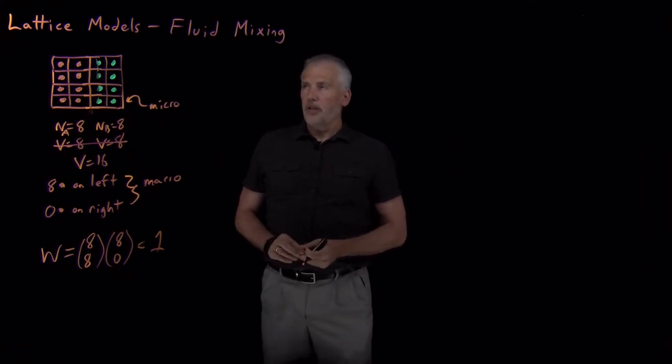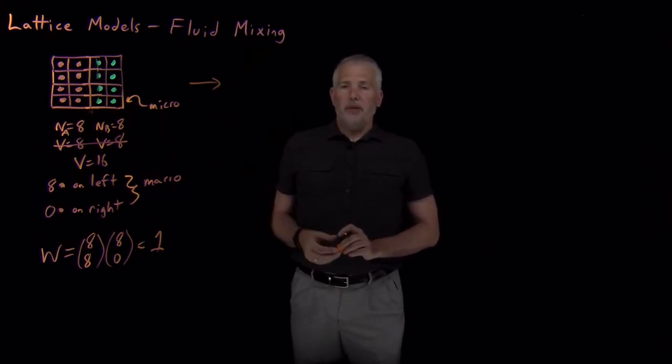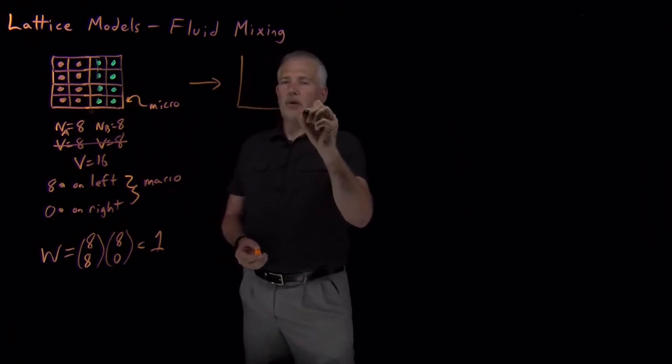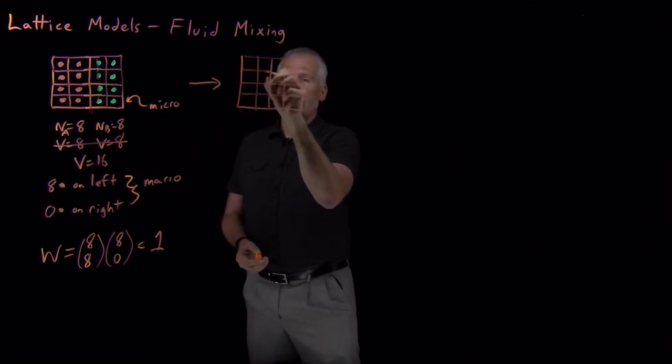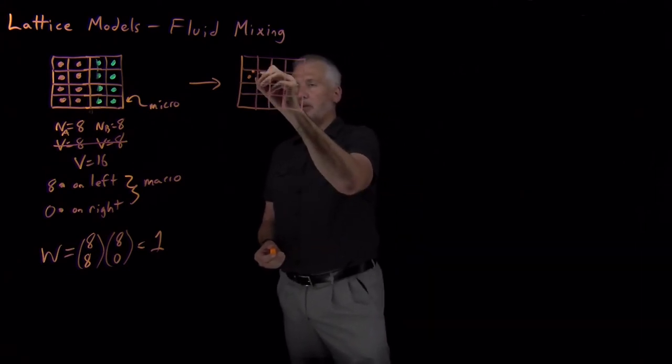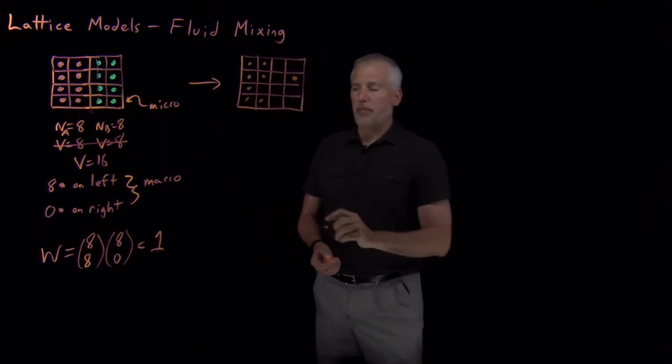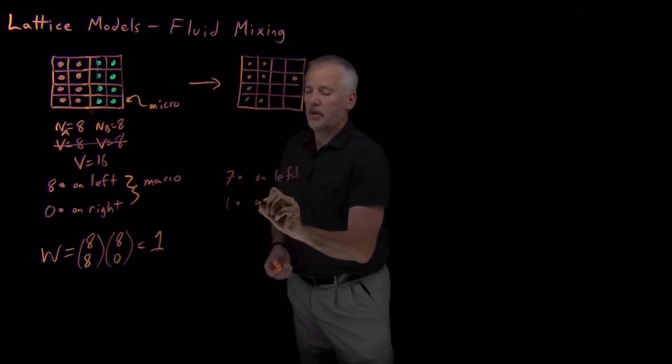So what we want to understand is what this lattice model has to say about whether fluids mix or don't. So I can draw other configurations that show the fluids mixing partially or fully, and the multiplicity, the probabilities, will tell us how likely those particular outcomes are. So let's consider a state where I've still got this combined volume of 16 grid positions. And let's say I want to let the molecules partially mix. I want to find out how likely it is that most of the molecules have stayed separated, but one molecule has moved over to the other side of the box. So my macrostate would be seven of these on the left and one of them on the right.